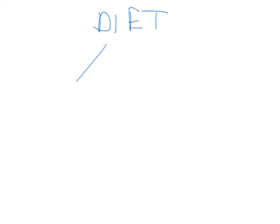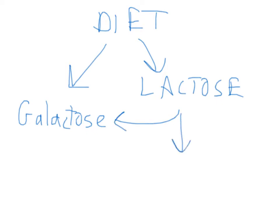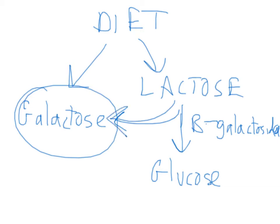First, let's talk about where we get galactose. We get galactose from our diet, and it can go straight into our intestinal cells and into our blood. The other way we can get it is through a molecule called lactose, which is a disaccharide, and it's broken down into galactose and glucose. The enzyme that does this is called beta-galactosidase. So there are two ways we can get galactose: straight from the diet or from lactose. This will be important later on.